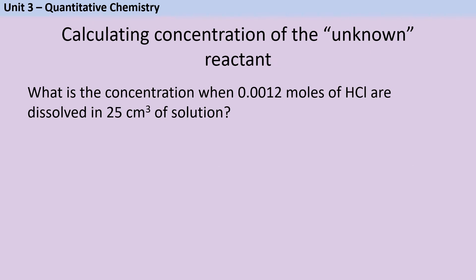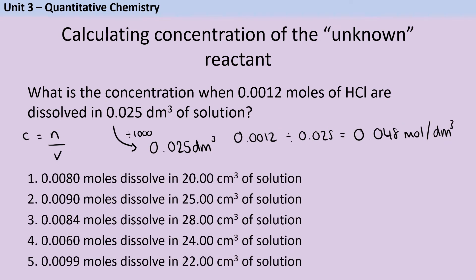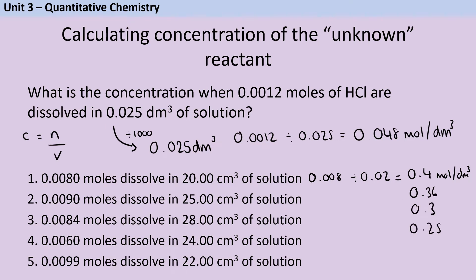The third and final step is to work out the concentration of the second reactant. Concentration is the amount in moles divided by the volume in decimetres cubed. So convert the volume by dividing by 1000 to get 0.025 dm³, then do 0.0012 divided by 0.025 to give a final concentration of 0.048 mol/dm³. For the five practice questions the answers are 0.4, 0.36, 0.3, 0.25, and 0.45 mol/dm³.